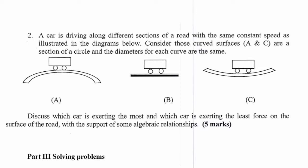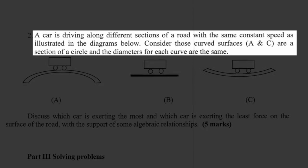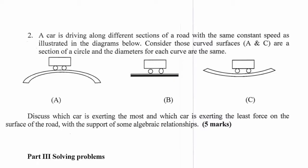And it's question number two and it reads: a car is driving along different sections of a road with the same constant speed as illustrated in the diagrams below. Consider those curved surfaces A and C are a section of a circle and the diameters for each curve are the same.